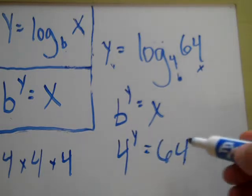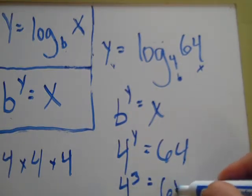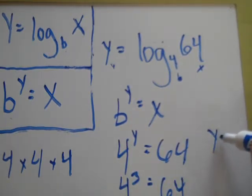So, we now know that 4 to the 3rd power equals 64. Therefore, y equals 3. And that is how you evaluate a logarithmic expression without a calculator.